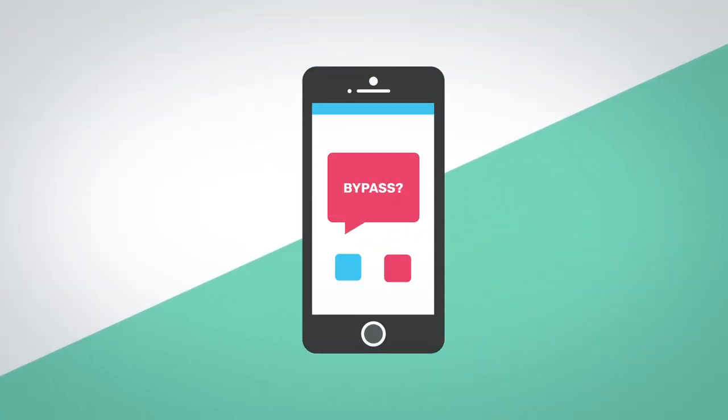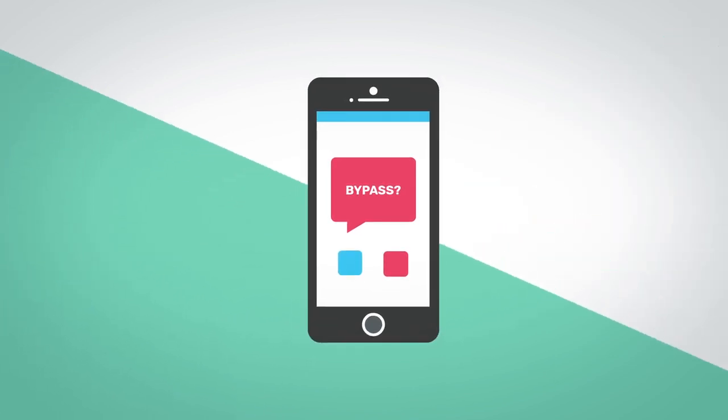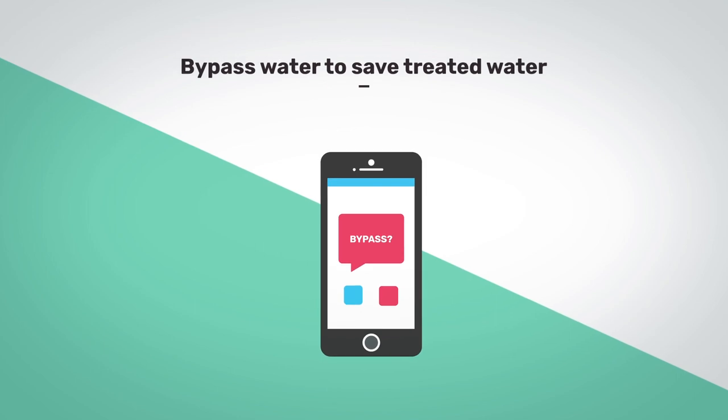Another unique feature offered in the drop cartridge filter is the ability to remotely bypass the treatment. If you happen to be outside watering the garden and don't want to use treated water, turning off treatment is as simple as opening the drop app and touching a button.